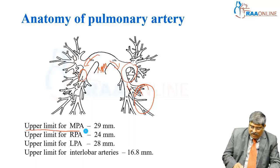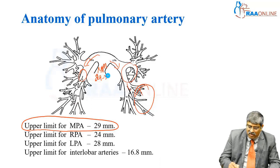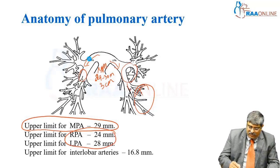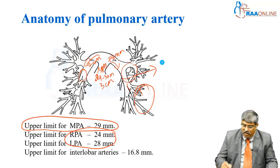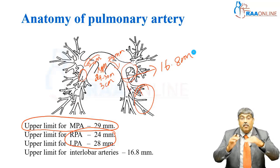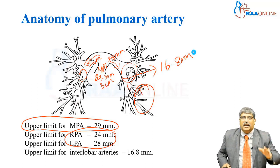Normally, the upper limit for the main pulmonary artery is around 29 to 30 millimeters, that is maximum 3 centimeters. Coming to LPA and RPA: the LPA is around 28 millimeters, RPA is around 24 millimeters, and the lobar arteries are around 16.8 millimeters. This is the normal upper limit of measurement of the various pulmonary arterial branches.